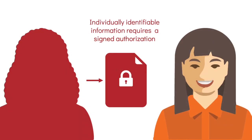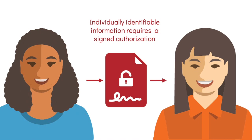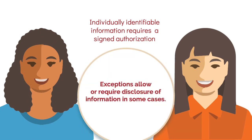The general rule under HIPAA and California law is that health care providers must protect the confidentiality of individually identifiable health information. This information cannot be shared unless a signed authorization allows the release of the protected health information. However, there are exceptions in HIPAA and state law that allow or require disclosure of information to specific individuals or for specific purposes in some cases.